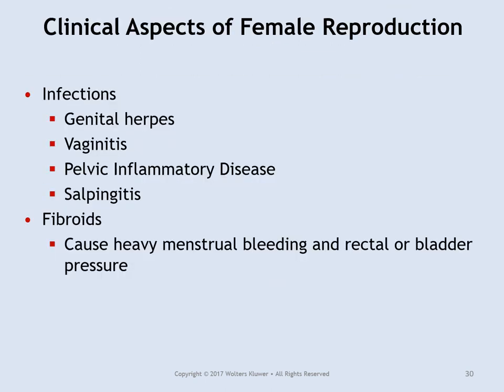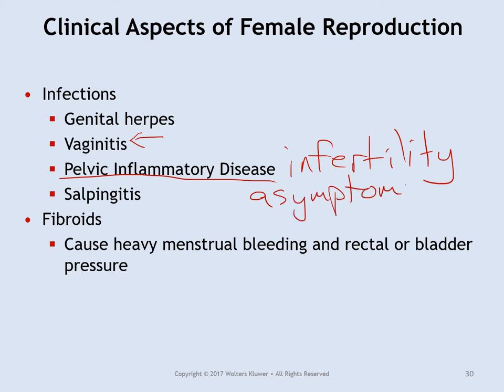Let's look at some clinical conditions. Most infections of the female reproductive tract are STIs, which can lead to vaginitis — inflammation of the vagina. Pelvic inflammatory disease (PID) is inflammation of the uterus and fallopian tubes that can lead to infertility if not treated promptly, and it often goes undetected because it tends to be asymptomatic. Fibroids are abnormal growths in the uterus that can cause heavy bleeding and pressure on the rectum or bladder.